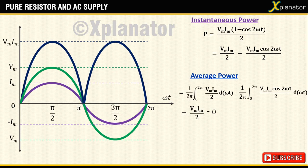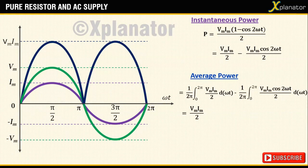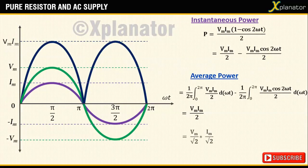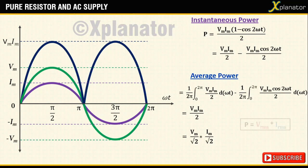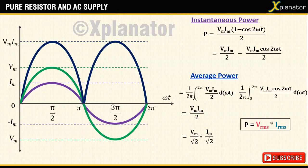So the net average power becomes vm im by 2. It can further be written as vm by root 2 into im by root 2, which is popularly known as vrms multiplied by irms.